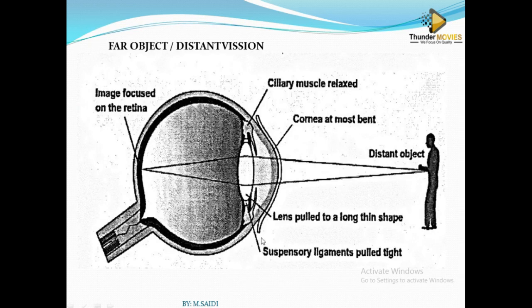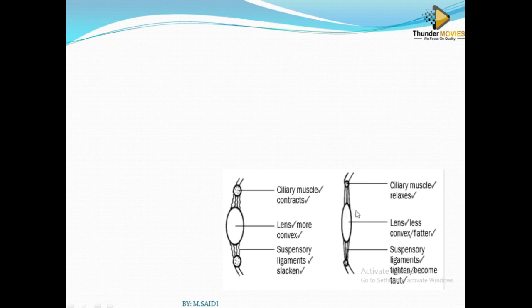For an object which is far, it is the opposite. It's too far, so you see it as very small. The light comes as a small beam. So what you need to do is make the lens smaller so that small beam of light can be focused onto the retina.